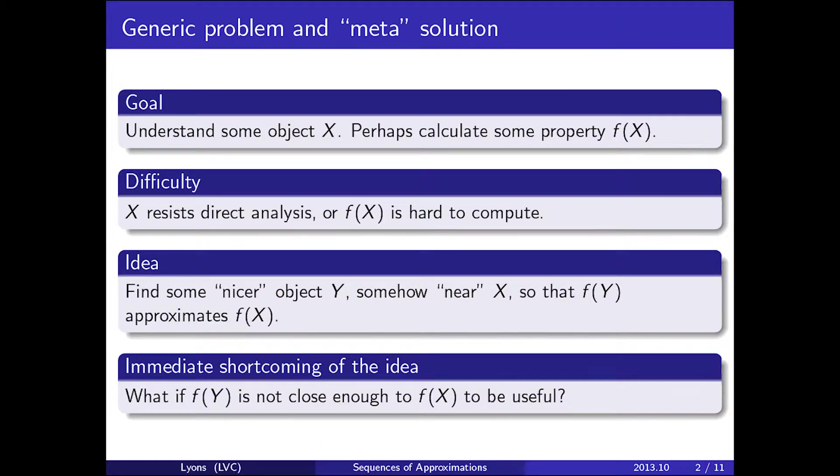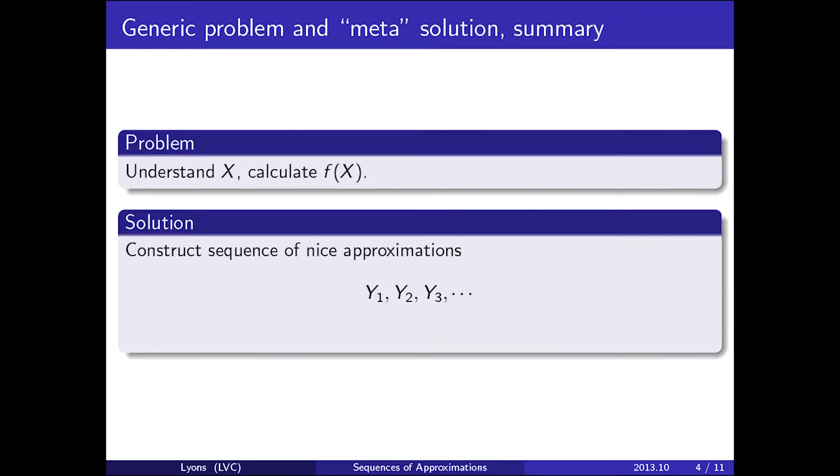Here's the summary. We wish to understand X and calculate some property f of X. We construct a sequence of nice approximations, starting with the first Y1, then improving Y2, then Y3, and so on, so that Yn approaches X and f of Yn approaches f of X, with greater and greater accuracy.